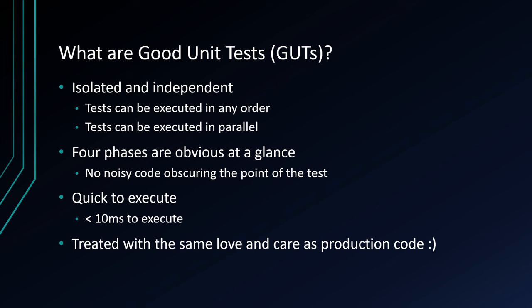If we have a lot of noisy code in our test and the test method goes on for hundreds of lines, you can't look at that and know what's going on. Unit tests should be quick to execute — ideally less than 10 milliseconds — because we're going to have thousands of unit tests as we develop code and we want to run them to know we haven't introduced any errors. Good unit test code is treated with as much care as production code; it's a first-class citizen, not an afterthought.